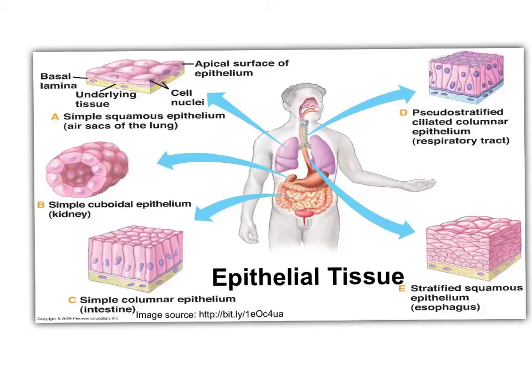Simple cuboidal epithelium is found in the kidney. Each individual cell is kind of cubic shaped, but together they look like a pool noodle. Simple columnar epithelium is found in the intestine; like the name, they kind of look like columns — thin and long. Pseudostratified ciliated columnar epithelium: pseudo means false, so this means this type of epithelium looks like it has many layers but actually it doesn't. Stratified squamous is the skin epithelium and it helps protect inside tissues.